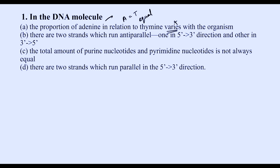Option B states there are two strands which run anti-parallel — one in the 5' to 3' direction and the other in the 3' to 5' direction. We know the structure of DNA: one strand always runs 5' to 3' and the other 3' to 5'. So option B is correct.